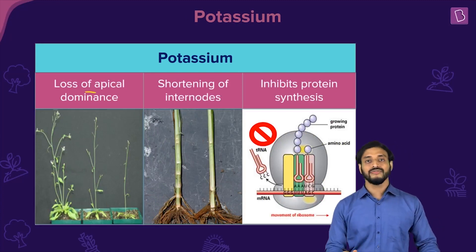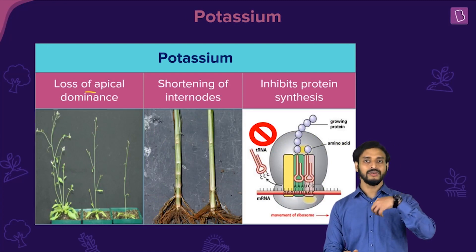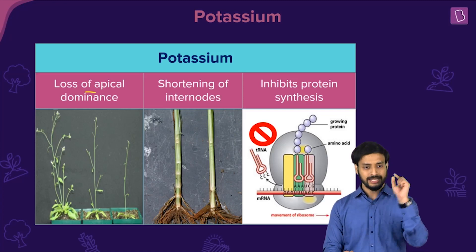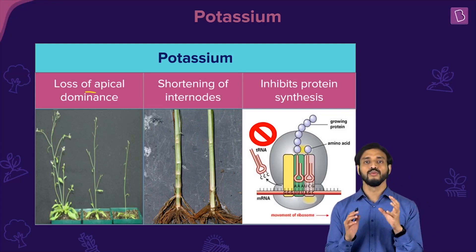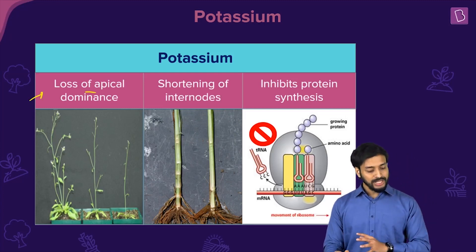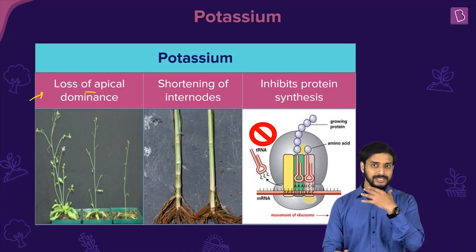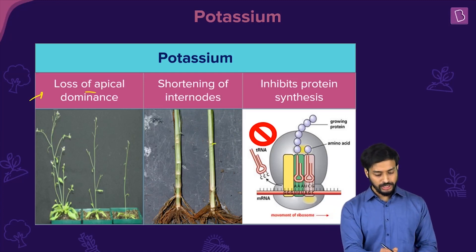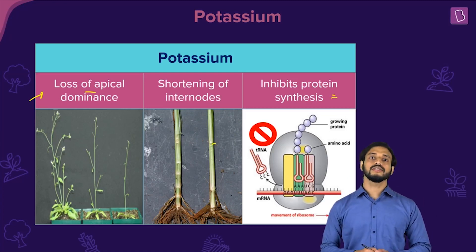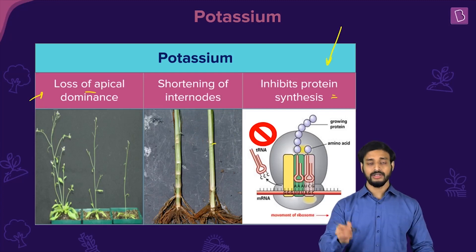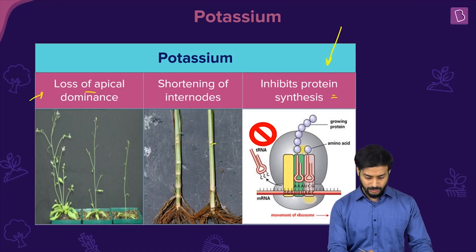Potassium deficiency causes loss of apical dominance — meaning the apex does not grow properly. There is also shortening of internodes, and protein synthesis is inhibited. These are all undesirable effects, so potassium is very important for plants.